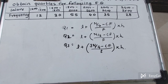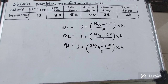Hello everyone, this is Measures of Dispersion Part 2. We already studied the measures of dispersion for individual observations — how to find Q1, Q2, Q3 for individual observations.